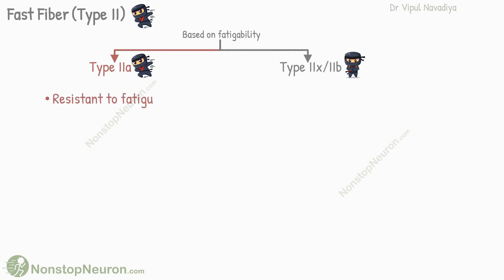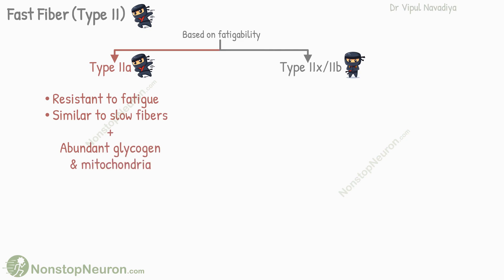Type 2A fibers are resistant to fatigue. As such, they are similar to slow fibers — they can use oxidative metabolism for energy. But in addition, they have abundant glycogen and a greater number of mitochondria. These additional features help them generate ATPs at a faster rate, as needed for fast contraction.